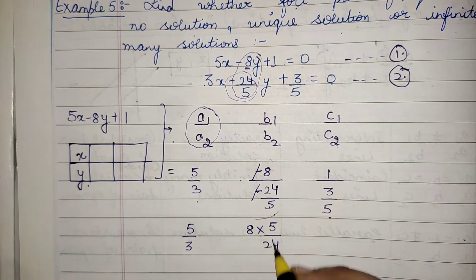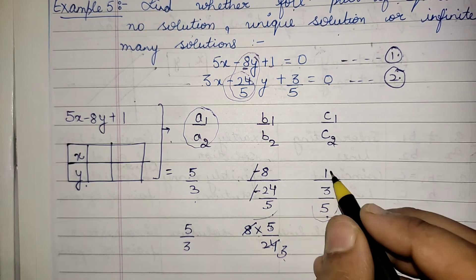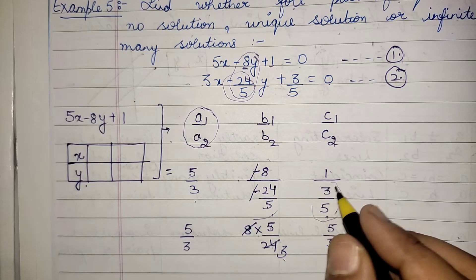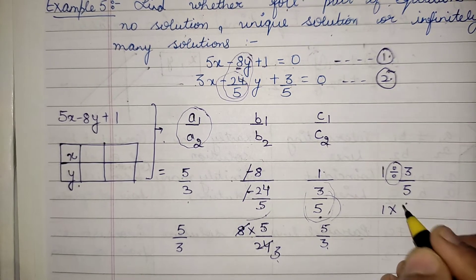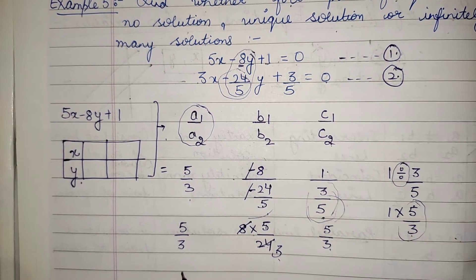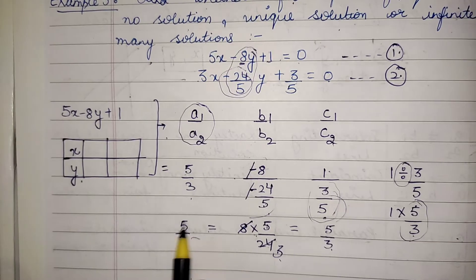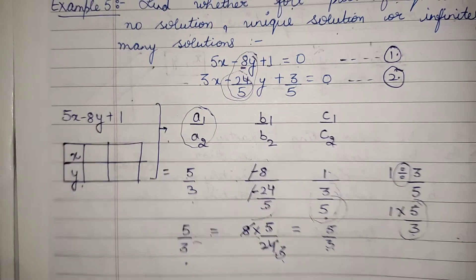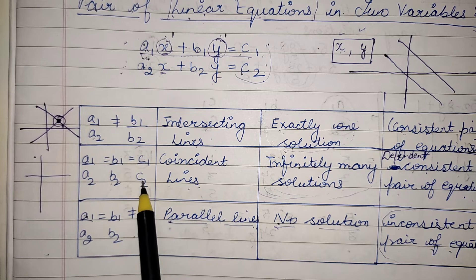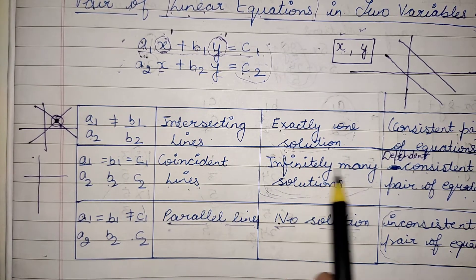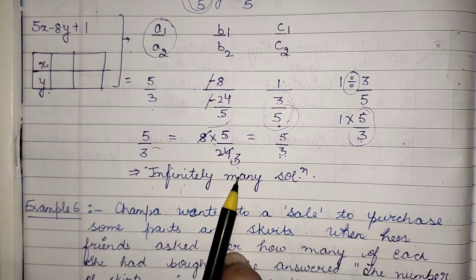Solving these: 5/3 stays as is. The minus signs in b1/b2 cancel, giving 5×5/24 which simplifies to 5/3. For c1/c2: 1 ÷ (3/5) = 5/3 by reciprocal multiplication. All three ratios equal 5/3, so a1/a2 = b1/b2 = c1/c2. From the table, this means the lines have infinitely many solutions — proved without plotting the graph.